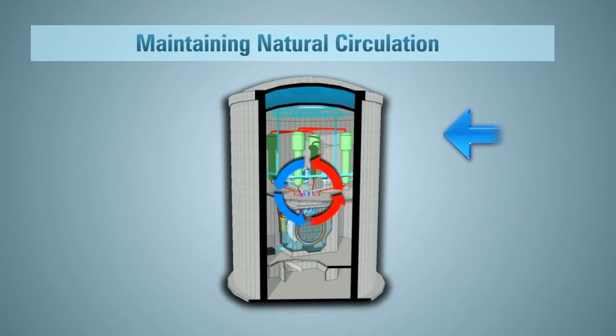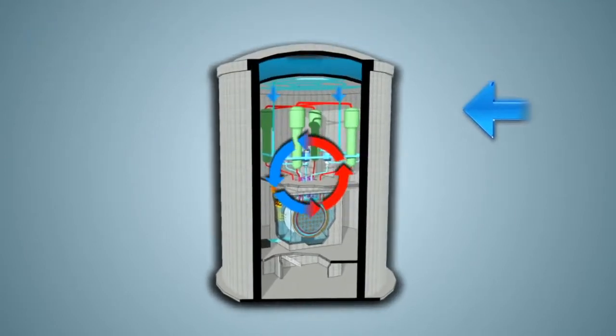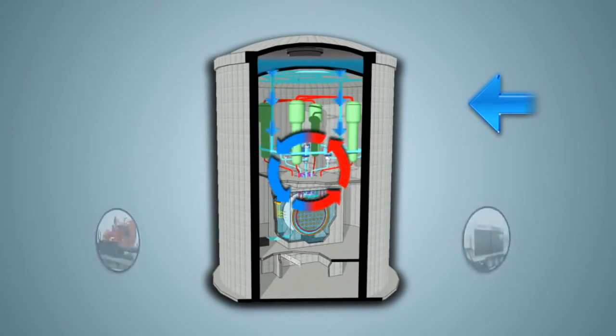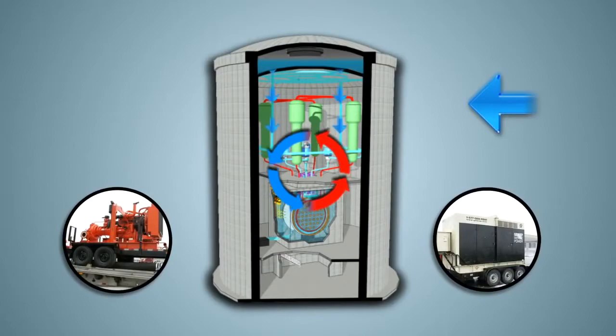Water is now being added by a gravity-driven system connected to a reserve water storage tank. This keeps enough water in the steam generator to maintain natural circulation. This also allows time for emergency mitigation equipment to be put in place.